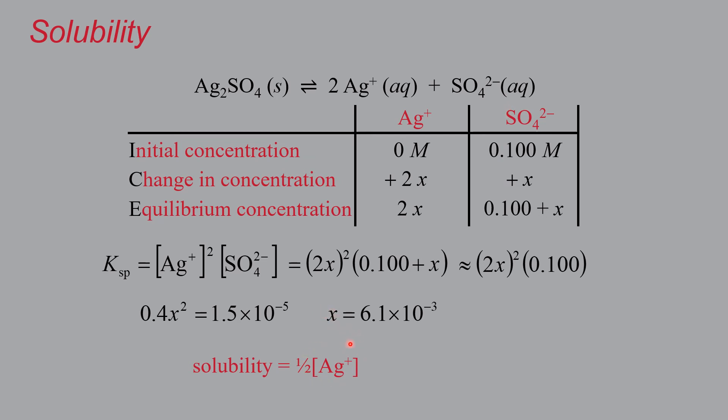So you have to do it in terms of the silver because still the only place the silver came from is this dissociation. But you have to make one slight addition to it, that the solubility of the stuff has to be defined as half of the silver concentration. Because for every mole of silver sulfate that dissolves, we get two moles of the silver ions. And if you do that, one half of 2X is X, which means that in this case, we are dissolving 6.1 times 10 to the negative 3 moles of silver sulfate per liter in this 0.10 molar sodium sulfate solution.